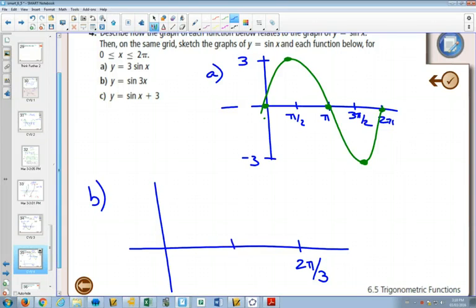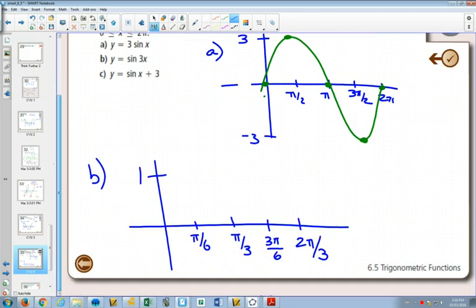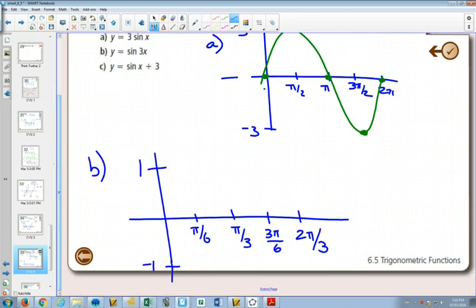What's half of 2π over 3? π over 3. What's half of π over 3? π over 6. One π over 6, two π over 6, three π over 6. I could have reduced that to π over 2, but I'll just write 3π over 6 for now. The amplitude of this one is still going to be 1 and negative 1.